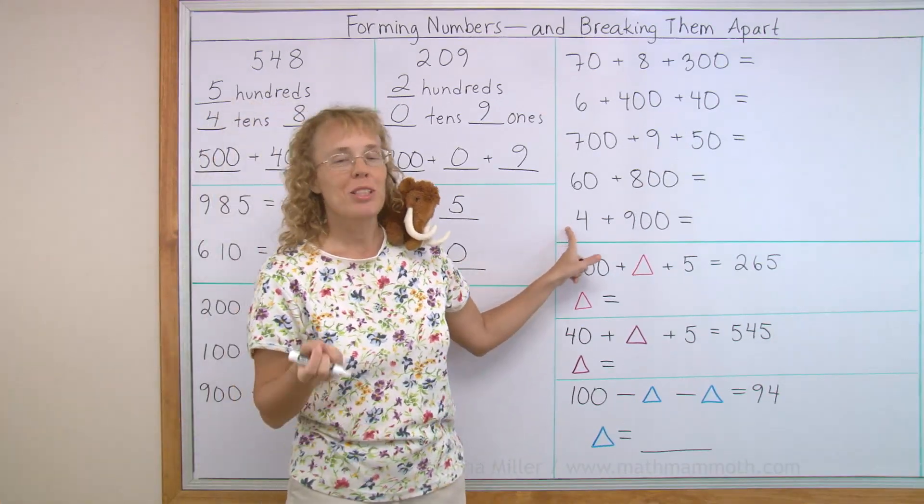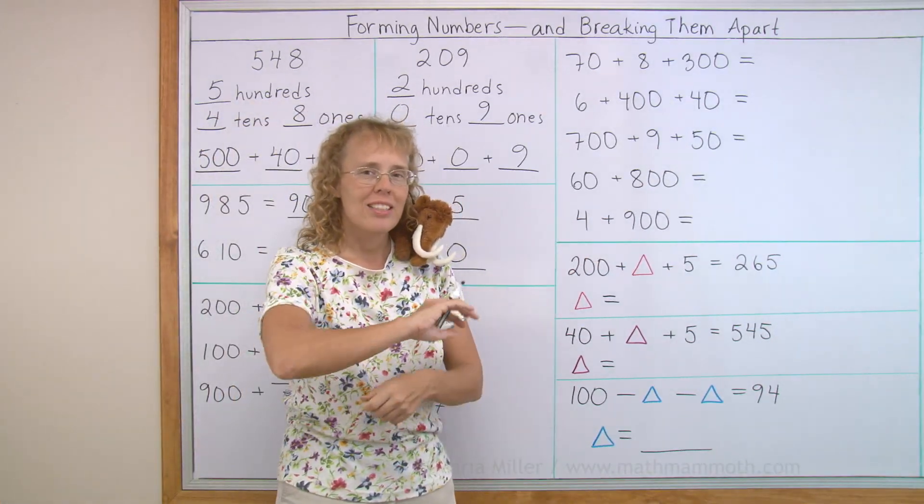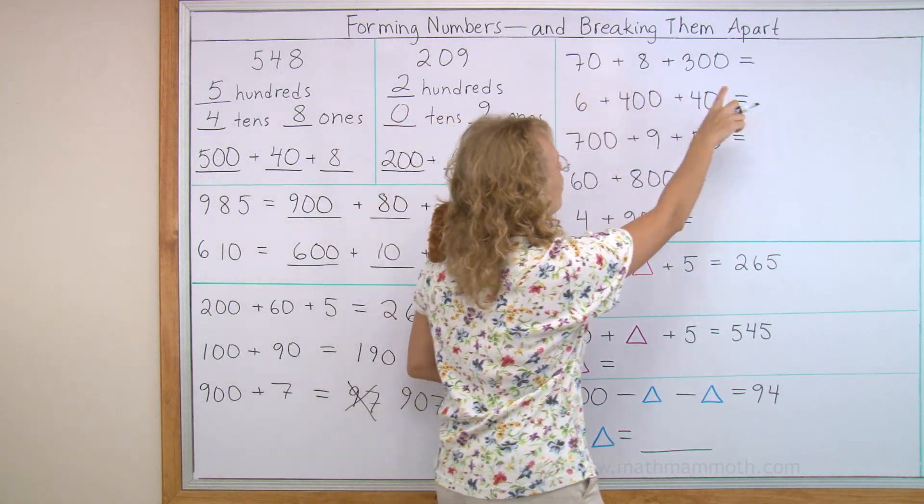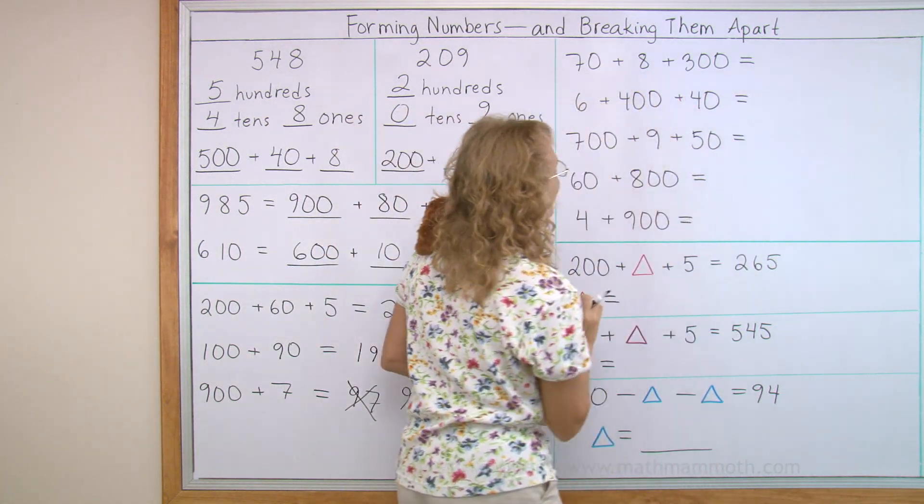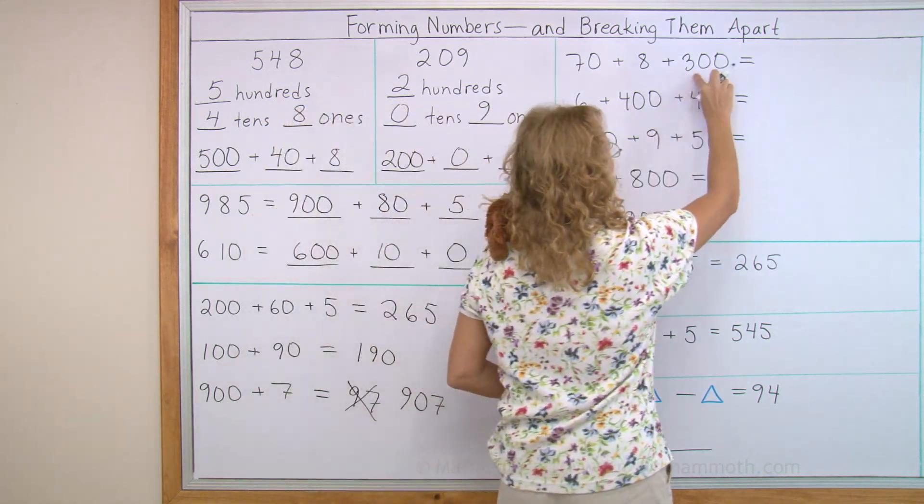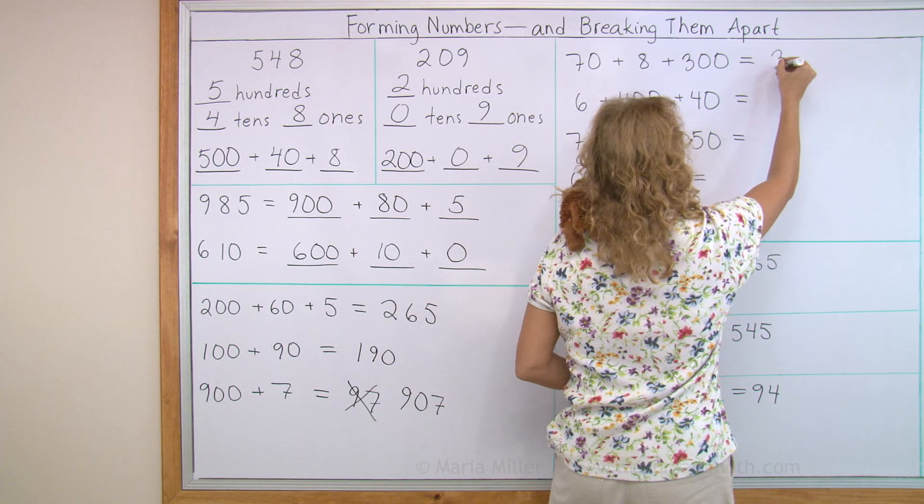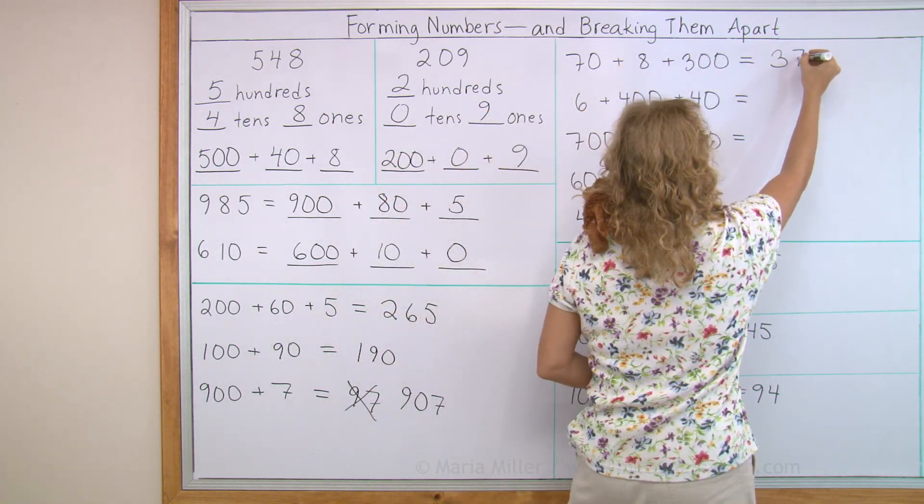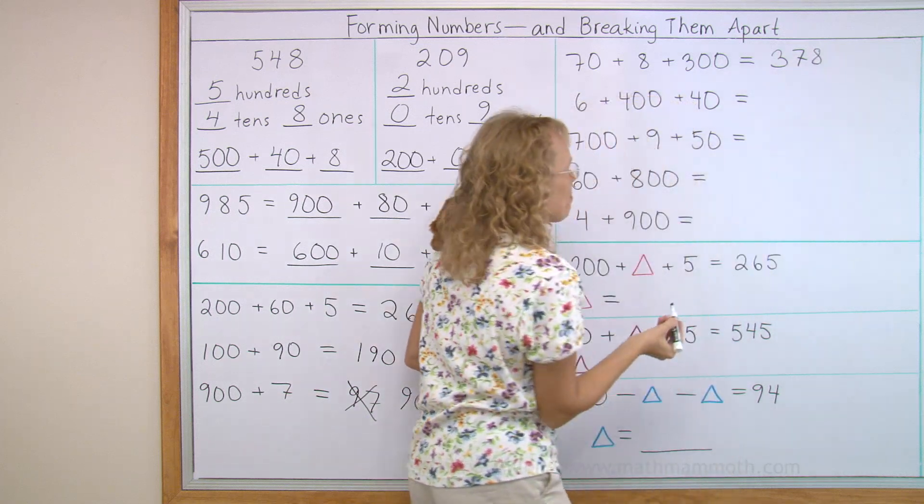Over here, we do the same, but the parts are scrambled up. So, this is not gonna make, I cannot write here seven, eight, three. I need to think, first come the hundreds. There are three hundreds, so I need to write three for the hundreds. Then seven for the tens, and then eight. Right? Did you understand?